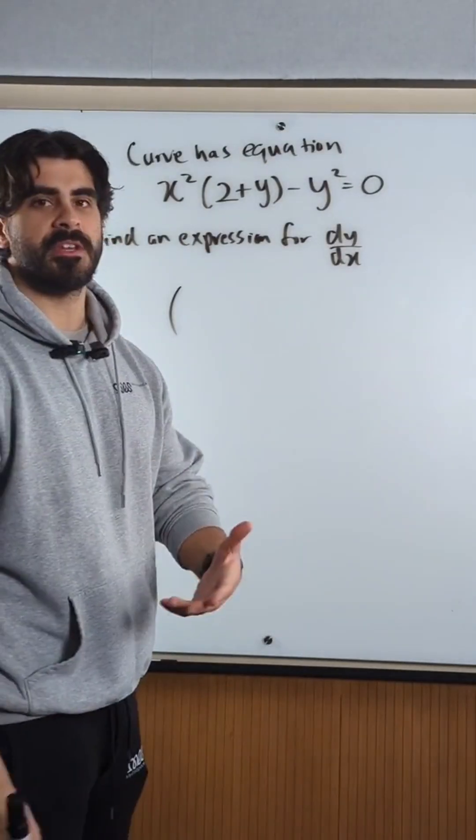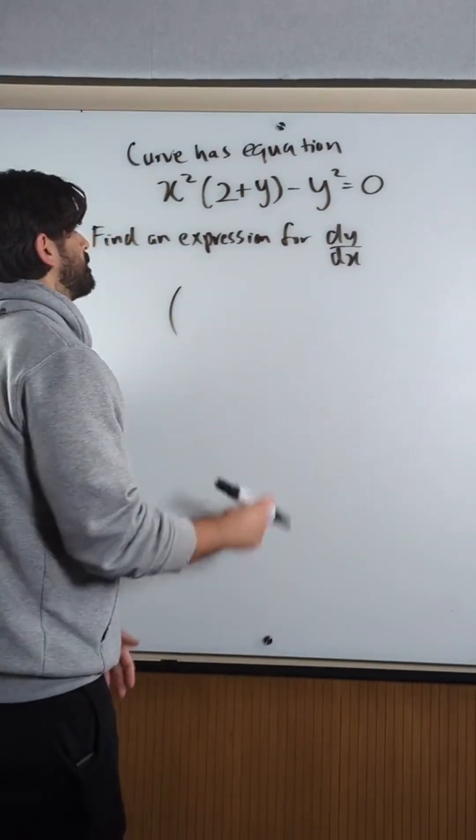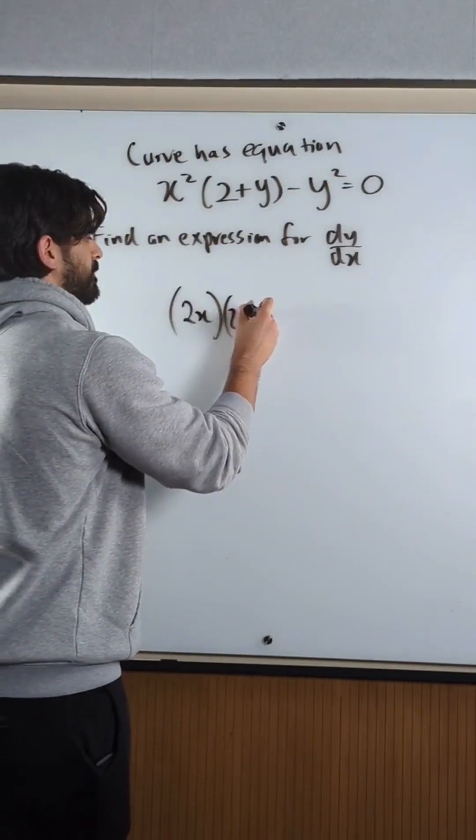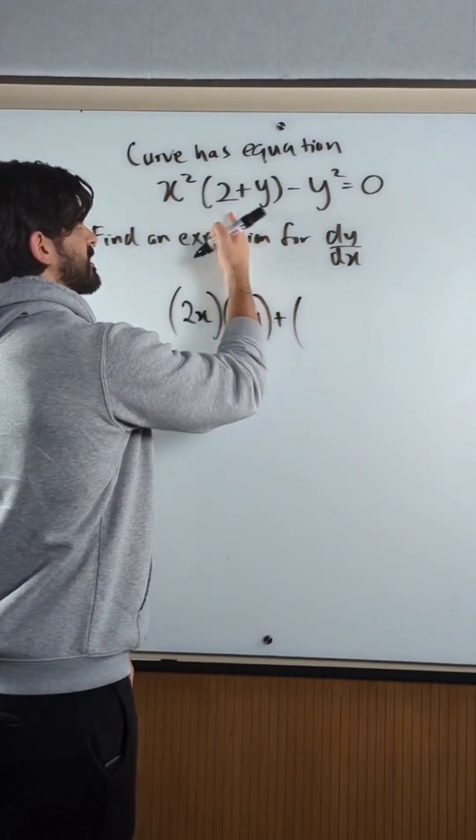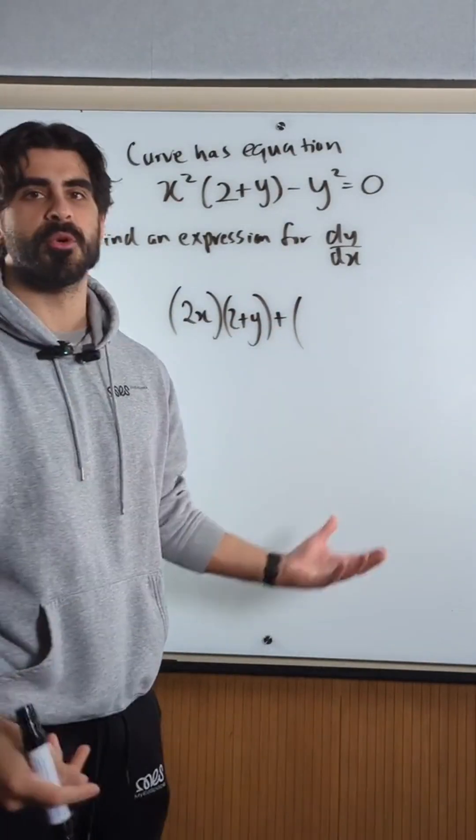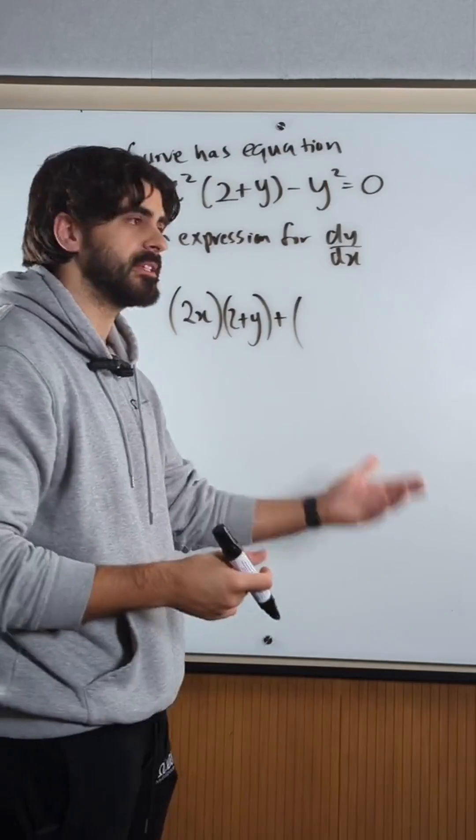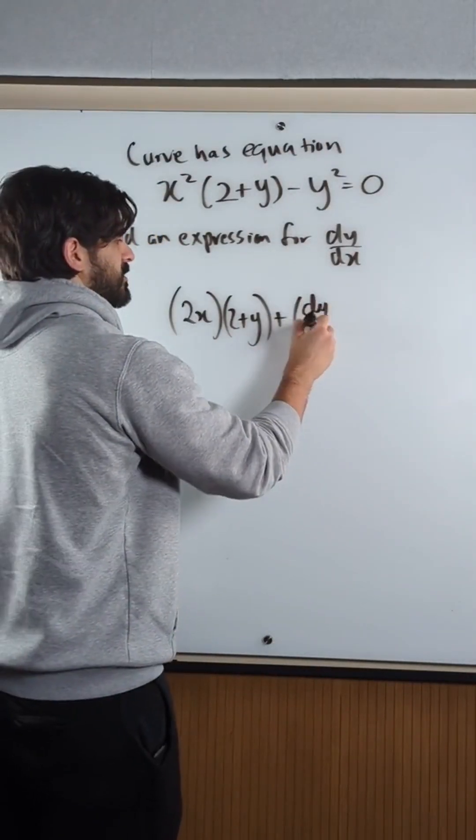Remember we don't use u and v, that's just long, that's book methods. Differentiate the first term times the second, plus differentiate the second term. Now this, remember we differentiate like normal - 2+y differentiates to 1, but it's a function of y so you times by dy/dx. So it actually just differentiates to dy/dx.